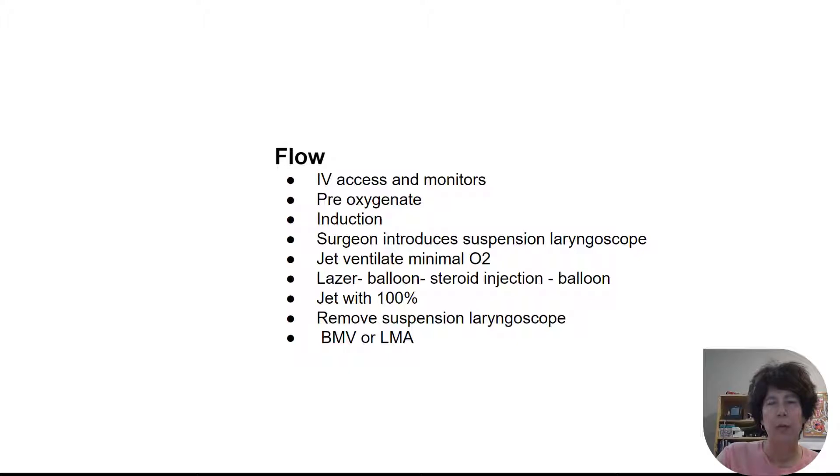So what's the flow of the case? You're going to bring your patient into the room, place your CIS monitor, start your IV. Then you're going to pre-oxygenate the patient really well, either just with your mask if there's not significant concerns in terms of oxygenating, or you're going to put the Optiflow on. You can induce your patient and give your muscle relaxant. And then the surgeon will introduce the suspension laryngoscope. Once they're happy it's in the right position, you're going to jet ventilate, working with the surgeon so that you're not jetting when there's occlusion of the airway or when they're actively lasering. We're going to keep our oxygen levels really low to not promote an airway fire. They're going to laser, they're going to inflate a balloon around that subglottic stenosis, do some steroid injections and balloon again. When they're done, we're going to jet with 100% to pre-oxygenate the patient, remove the suspension laryngoscope, and then wake the patient up either just by holding a mask or by putting a laryngeal mask in. So easy peasy.